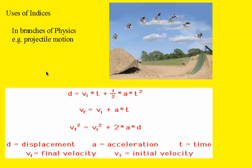In quite a few branches of physics, exponents arise. For example, in projectile motion, anything that follows this trajectory like this cyclist, guy on his bike, doing the jump, these equations would describe his motion. Notice that the time is squared, index 2, the velocity or the speed is squared, index 2 again.